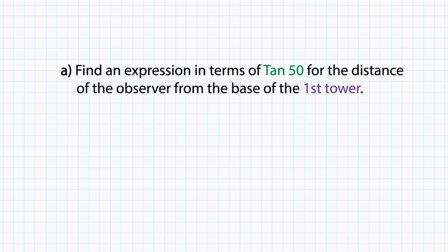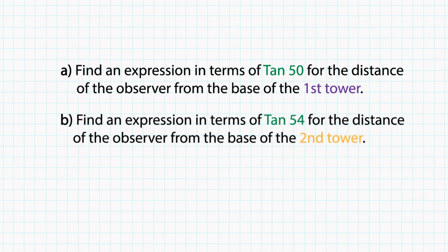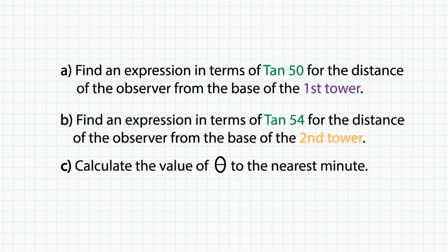Now the question is: a) find an expression in terms of tan50 for the distance of the observer from the base of the first tower, b) find an expression in terms of tan54 for the distance of the observer from the base of the second tower, and c) calculate the value of theta to the nearest minute.